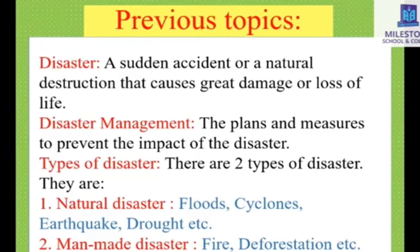How many types of disaster are there? There are two types: natural disaster and man-made disaster. Natural disasters are like flood, cyclones, earthquake, drought, etc. These are disasters on which we human beings have no hand — it's all in the hand of Almighty. Natural disaster will occur as a natural process.